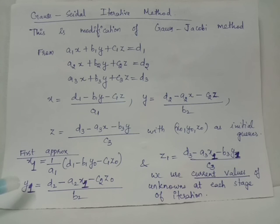When we evaluate y1 using this formula, the value of y gets updated from the initial value y0 to the updated value y1. These values of x1 and y1 will be used while evaluating z1. We have z1 equals (d3 - a3x1 - b3y1) / c3, where x1 and y1 are the values evaluated in this current iteration.